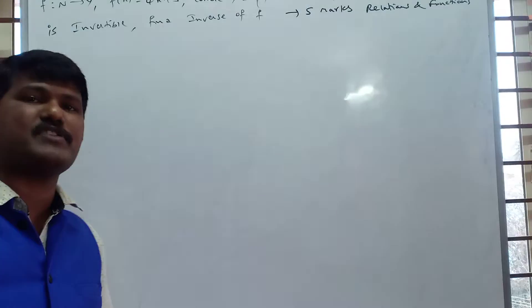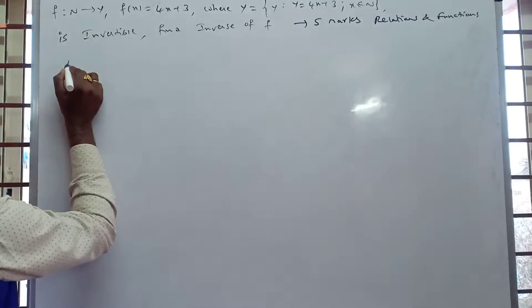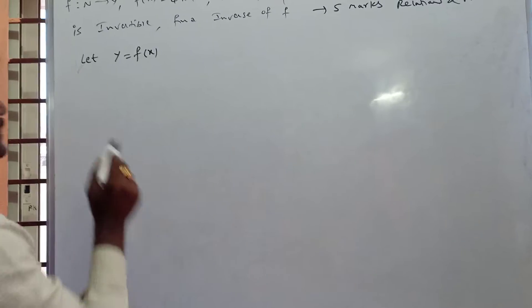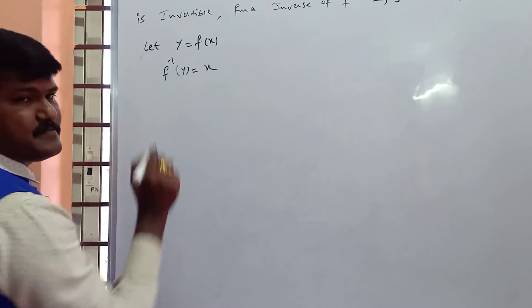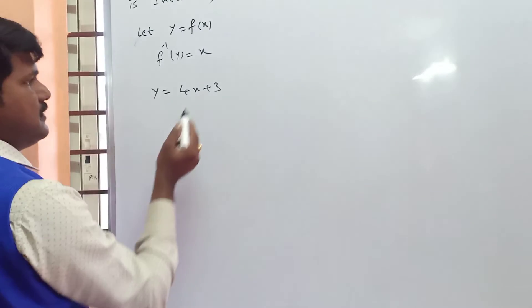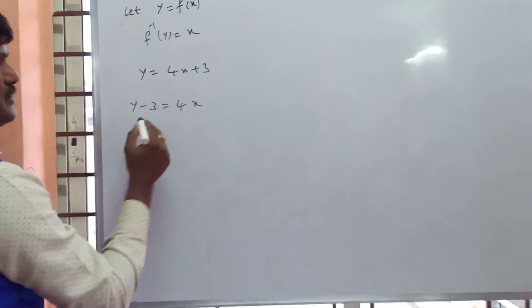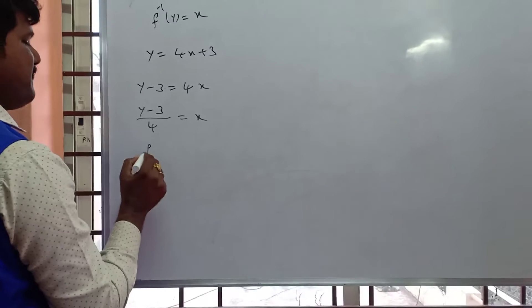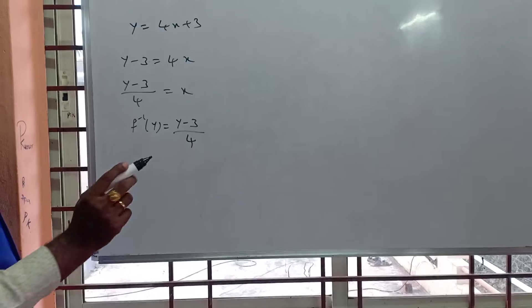In the given question, they did not give f⁻¹(y). In such cases, let y = f(x). Transferring f to the left-hand side gives f⁻¹(y) = x. Now, y = f(x) = 4x + 3. Transferring 3: y − 3 = 4x. Transferring 4: x = (y − 3)/4. Therefore, f⁻¹(y) = (y − 3)/4.